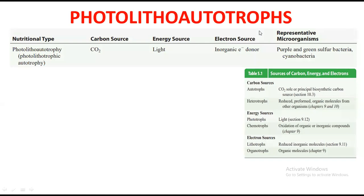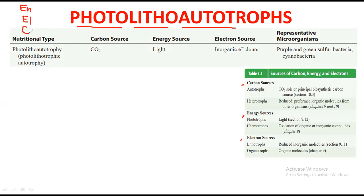In this video lecture, I will discuss what is basically the carbon source, energy source, and electron source of these microorganisms. First of all, I want to tell you how it gets its name. This term is divided into three parts: the first part is 'photo,' the second part is 'litho,' and the third part is 'autotroph.' Keep one trick in your mind: E, L, and C — energy source, electron source, and carbon source. According to this formula, these microorganisms are given names.